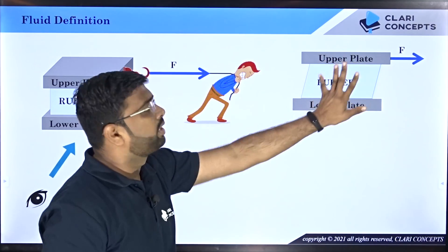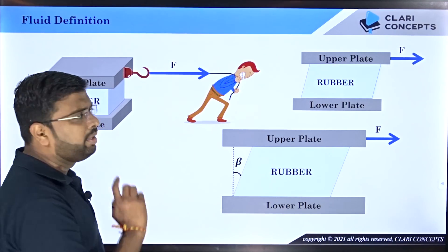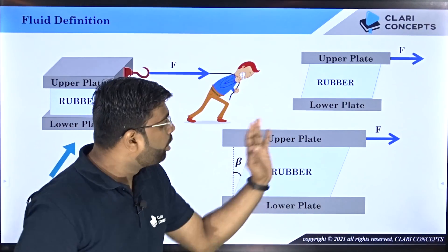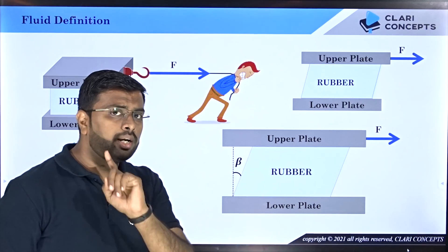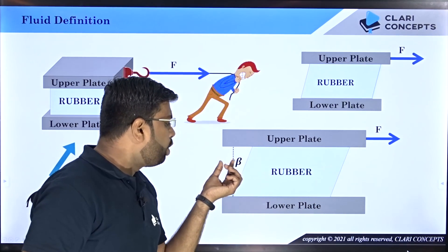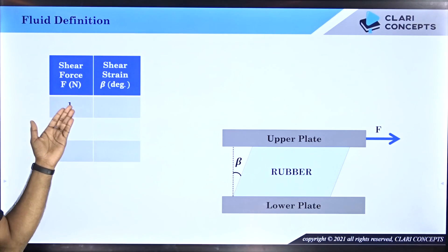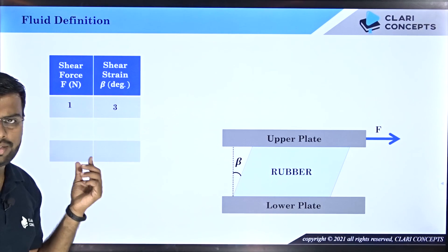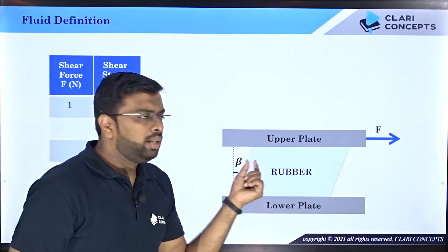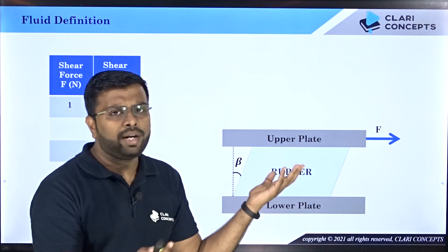With force F applied, there will be a deformation in the rubber. The angle of deformation is beta degrees, and the value of beta depends on the value of force F — more force means more beta. Importantly, as long as you keep applying this force, the deformation stays fixed. For example, if one newton produces three degrees of angular deformation, that angle stays at three degrees while the force is applied.